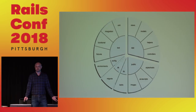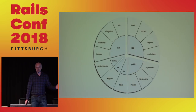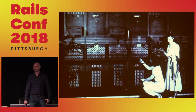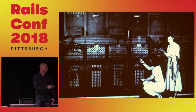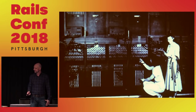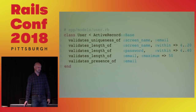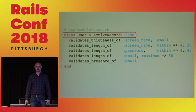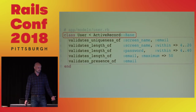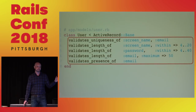Rails solved a bunch of the standard problems of web development. One of the things it could do is talk to the database. You could inherit from ActiveRecord::Base, interact with the database, persist data, pull it out, and validate data. This is from Rails Space, circa 2007. Already, Rails was doing amazing things.